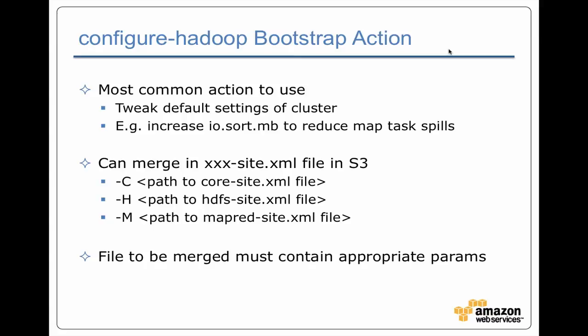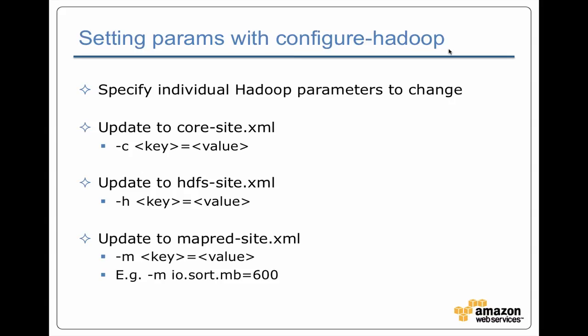There's another way you can do it where you're not actually providing XML files, but doing individual values. In that case, you can do a -c (lowercase C), and it's a key equals value for individual parameters. The same applies using lowercase -h for HDFS settings and lowercase -m for MapReduce settings. For example, if you want to bump up the io.sort.mb value — because a lot of data is being spilled to disk between the map and reduce phase and your tasks aren't using as much memory as available in the child JVMs — you could do -m io.sort.mb=600.